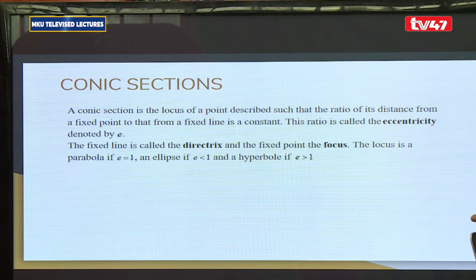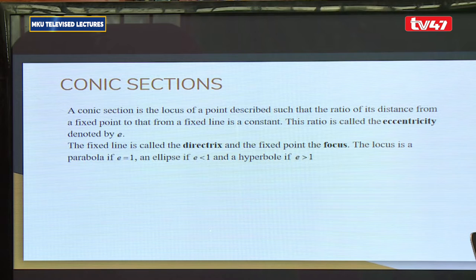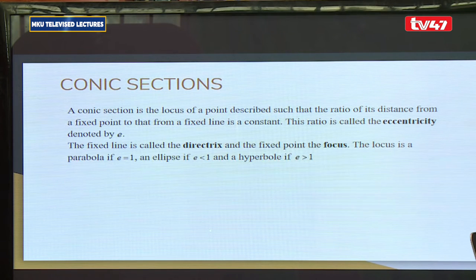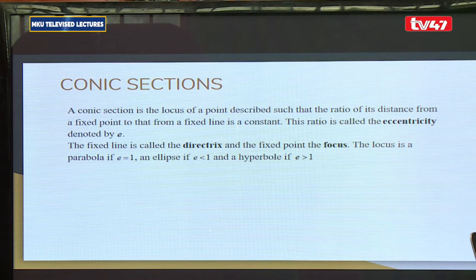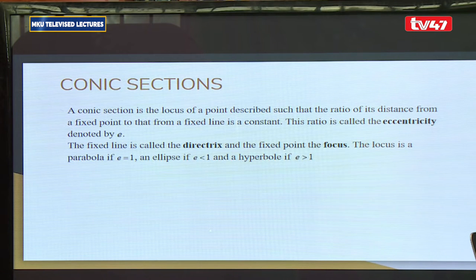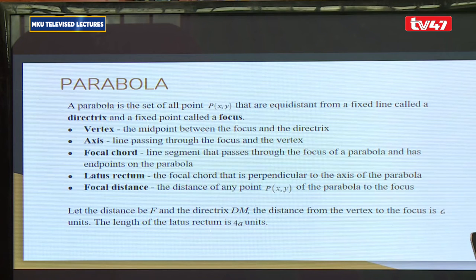Next we move to conic sections, covering only the parabola. A conic section is a locus of a point such that the ratio of its distance from a fixed point to that from a fixed line is a constant called the eccentricity E. The fixed line is the directrix and the fixed point is the focus. If E = 1, the locus is a parabola; E < 1 gives an ellipse; E > 1 gives a hyperbola.